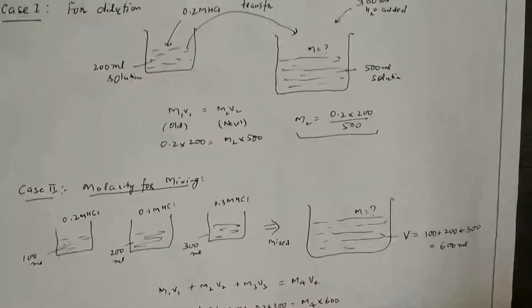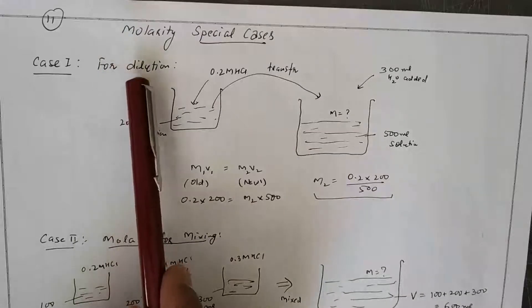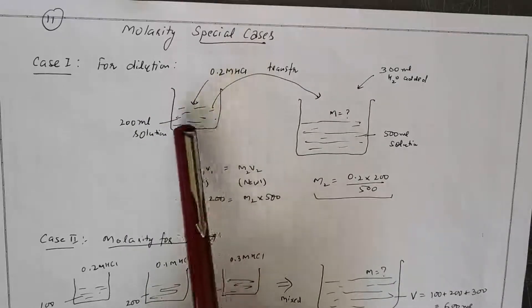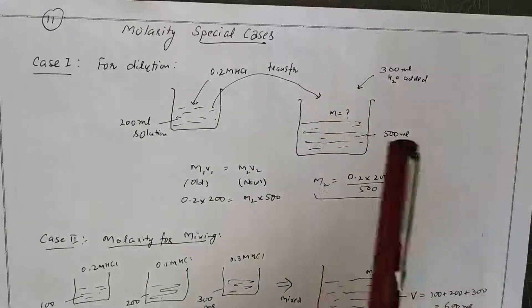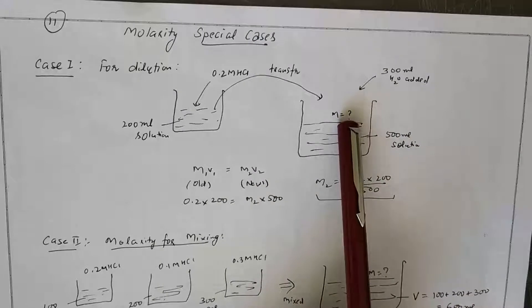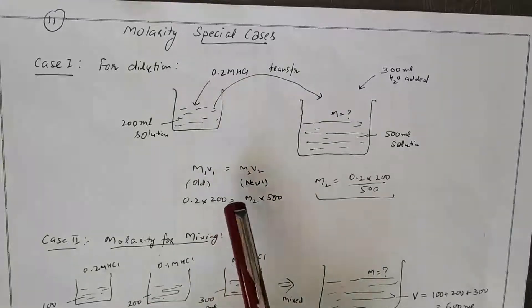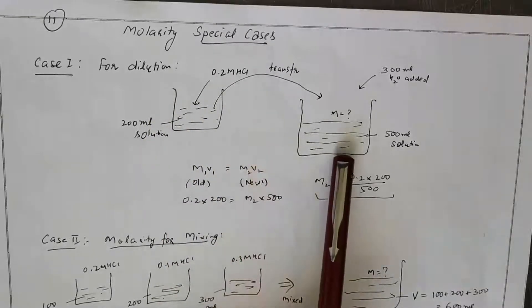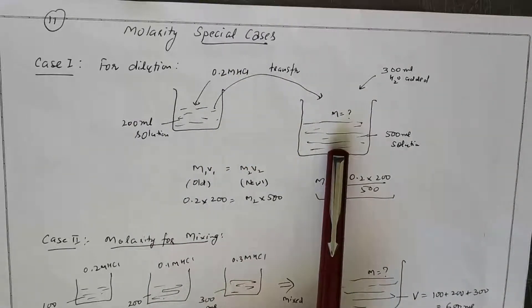Special cases for molarity — very important for MCQs. First case: dilution. If we have 200 mL of 0.2 molar HCl and add 300 mL of water, the total volume becomes 500 mL. To find the new molarity, use M1V1 = M2V2 (the molarity equation), where M1 = 0.2, V1 = 200, V2 = 500, and solve for M2.